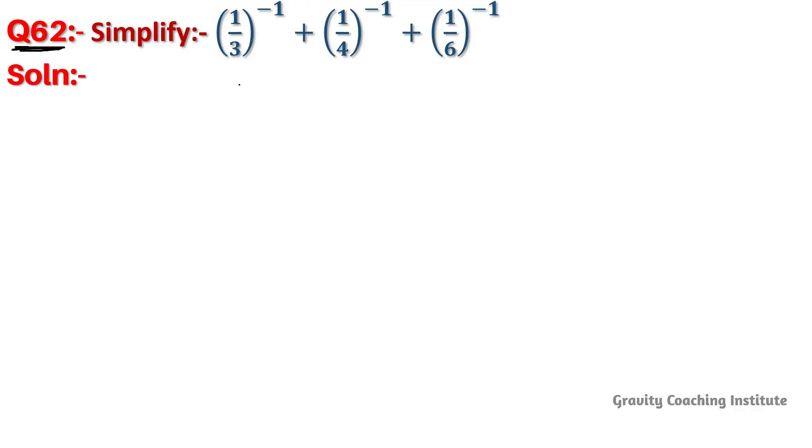Question number 62: Simplify (1/3)^-1 + (1/4)^-1 + (1/6)^-1. Solution: (1/3)^-1 + (1/4)^-1 + (1/6)^-1.